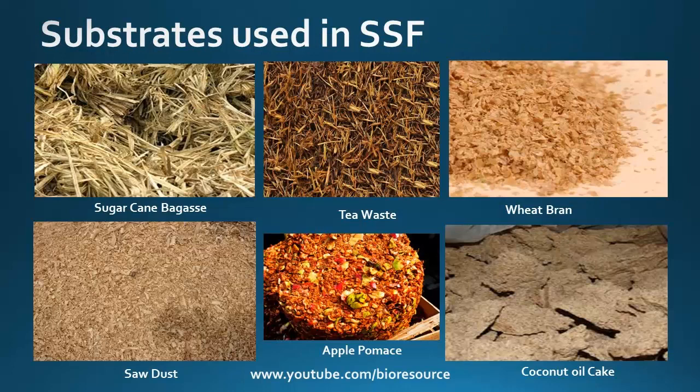Let's see what are the substrates used in solid state fermentation. Solid substrate fermentation employs natural raw materials as carbon sources such as cassava, barley, wheat bran, rice bran, sugarcane bagasse, cassava bagasse, and various oil cakes like coconut oil cake, palm kernel cake, soya bean cake, and groundnut oil cake. Also fruit pulps like apple pomace, corn cobs, sawdust, seeds, coffee husk and coffee pulp, tea waste, and spent brewing grains.